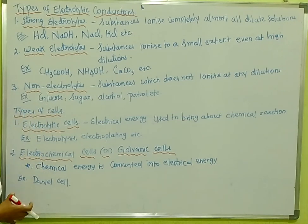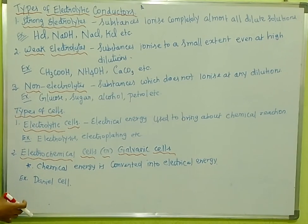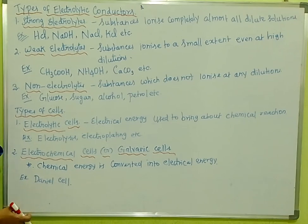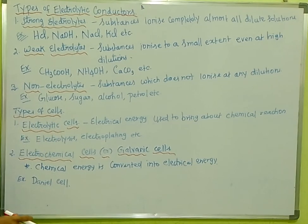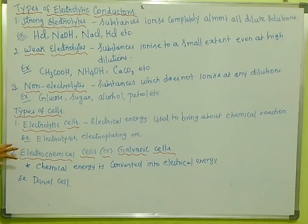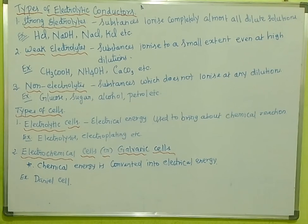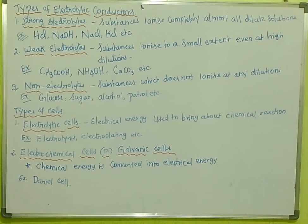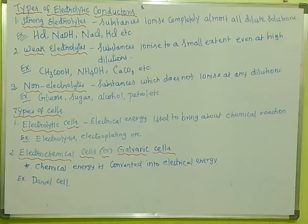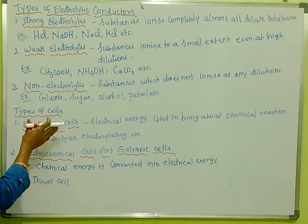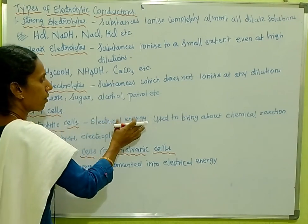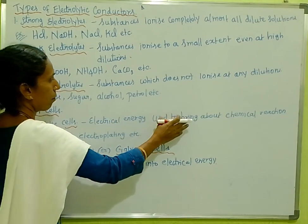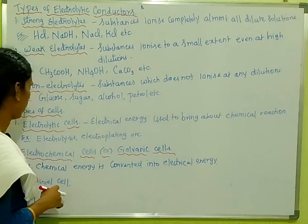Now, there are types of cells. First of all, we have electrolytic cells and galvanic cells. First of all, the electrolytic cell: electrical energy is used to bring about a chemical reaction.